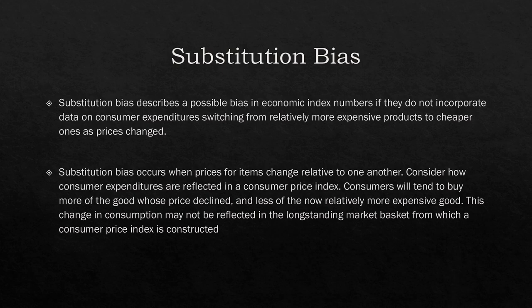There's also something called substitution bias, which is especially relevant in Nigeria. It describes a possible bias in economic index numbers if they don't incorporate data on consumer expenditures switching from relatively more expensive products to cheaper ones as prices change. In Nigeria, when rice is expensive, people switch to cassava; when cassava is expensive, they switch to something else like amala. If you're not accounting for that substitution, it causes problems in economic calculations.